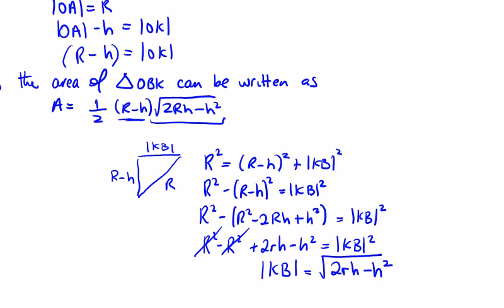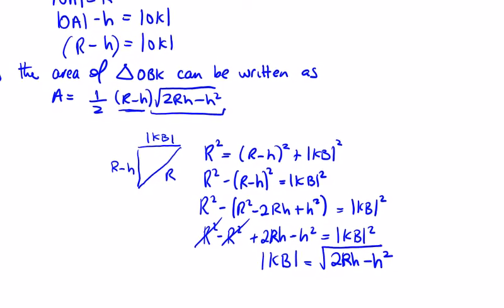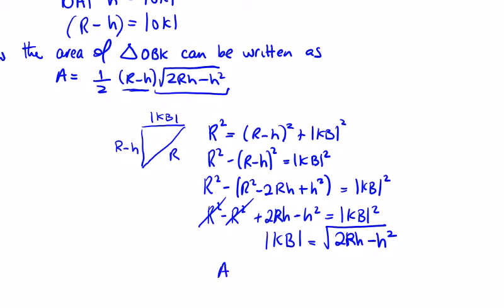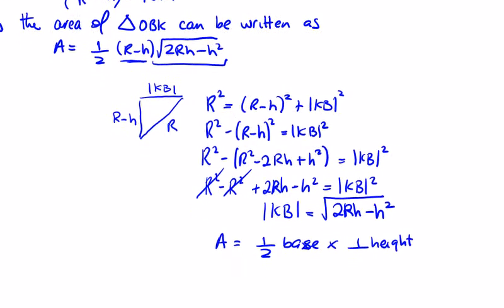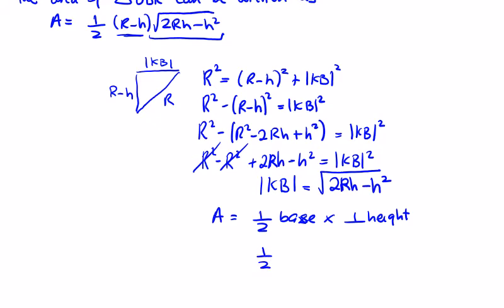That should be a big R — it mysteriously changed to a little one, big R. So the area of the triangle is half the base by the perpendicular height, which equals half times (R minus H) — from part one — times the perpendicular height, which is the square root of (2RH minus H squared).